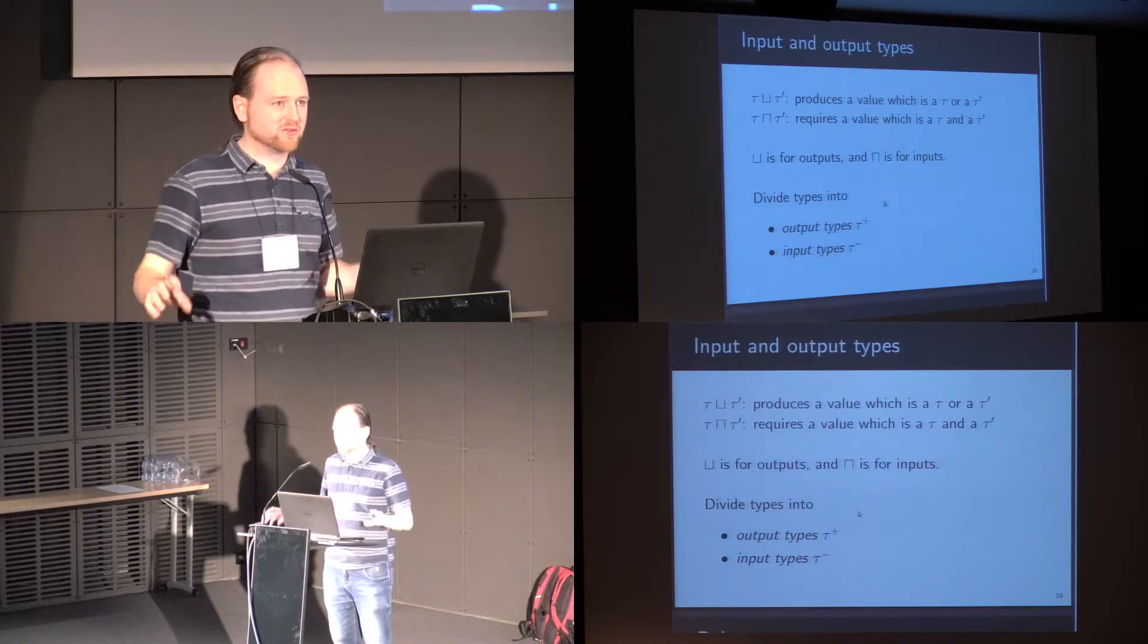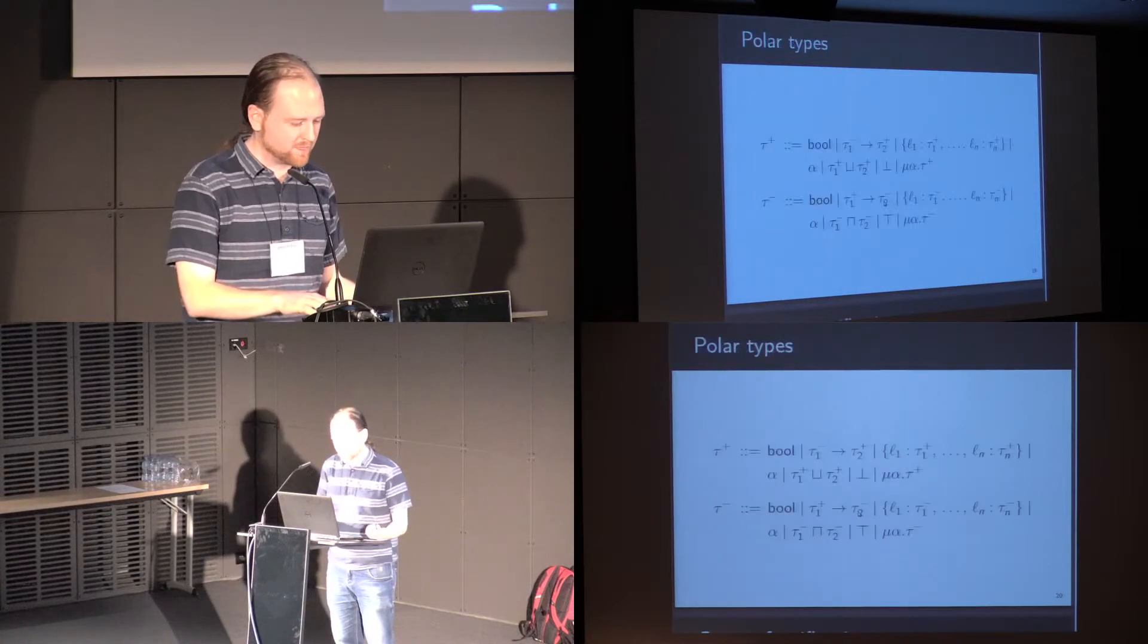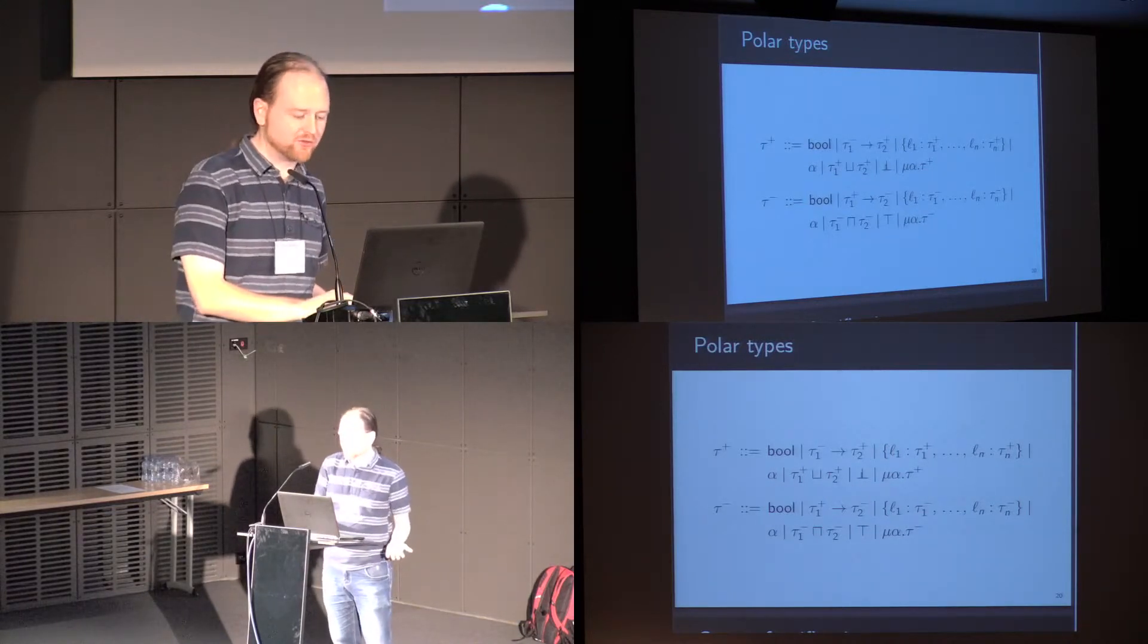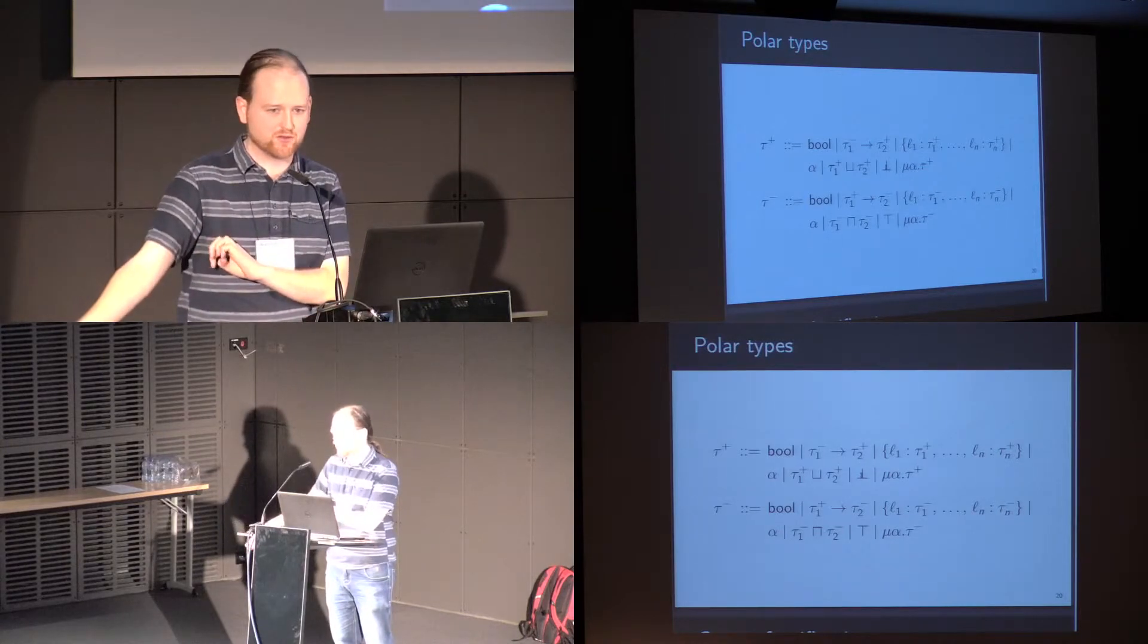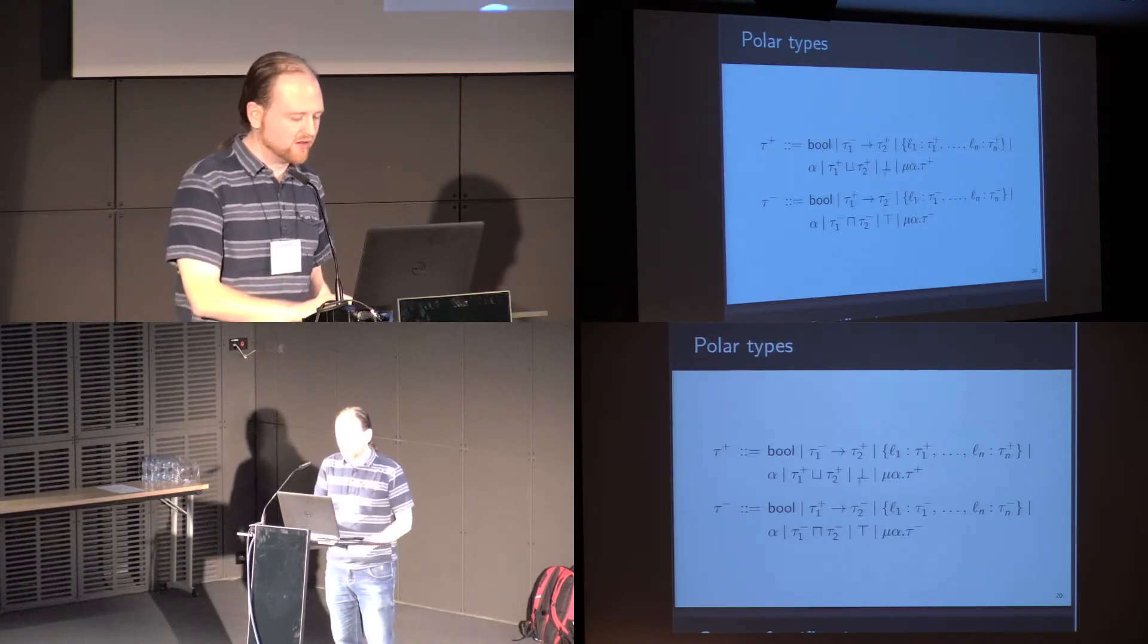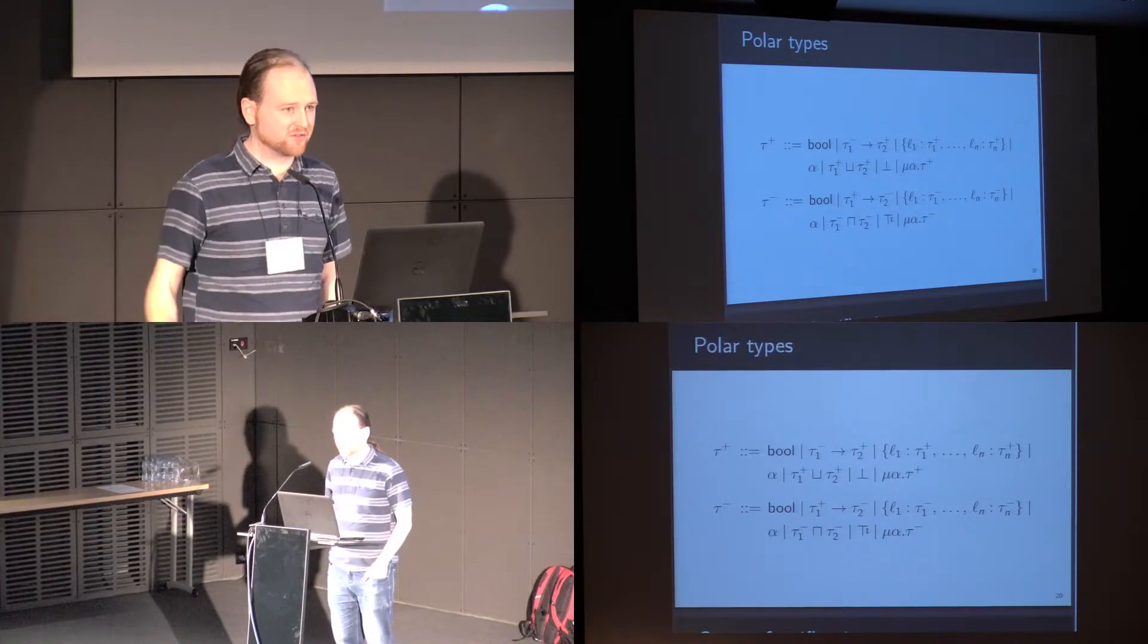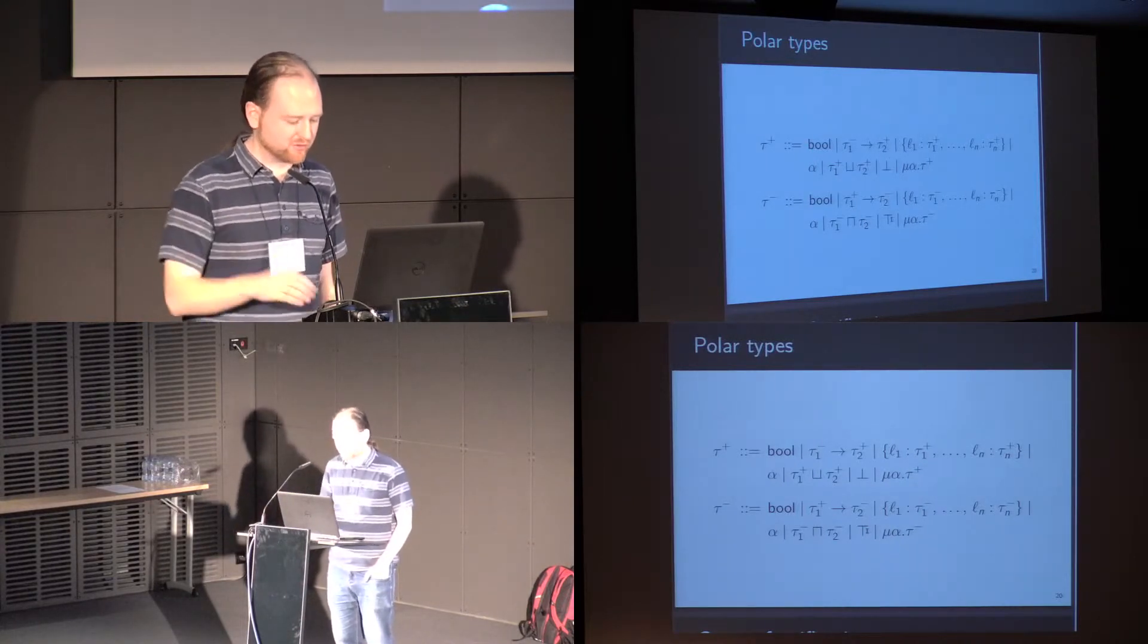So we can divide types into two different classes: the output types and the input types. The output types have upper bounds in them, and the input types have lower bounds in them. And the output types also have bottom in them, because I can produce something which is a non-terminating computation, but can't demand that my input be a non-terminating computation. The lower bounds have the top type in them, because I can accept something and not care what it is, whereas I can't produce something without knowing what I've made.